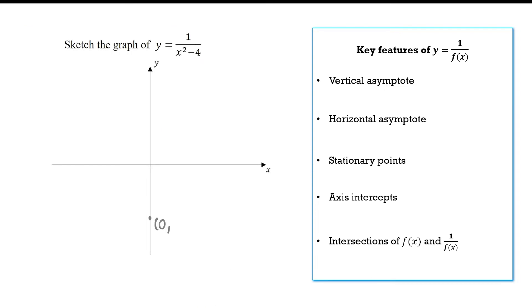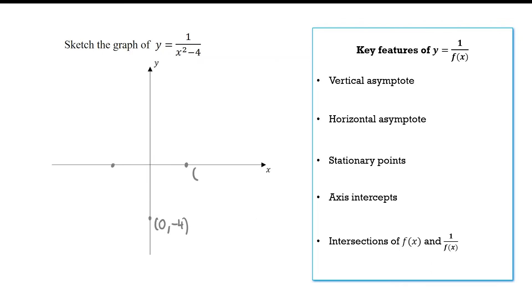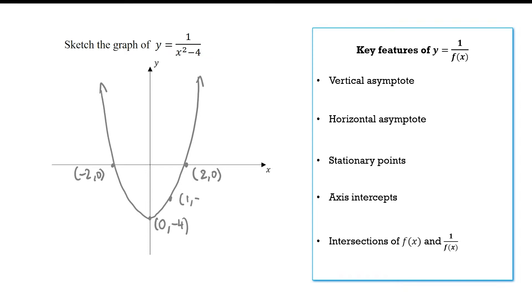Consider the parabola x squared minus 4. It has a vertex at (0, negative 4) and x-intercepts at plus or minus 2. We'll also put a few more points in to help with our reciprocal.